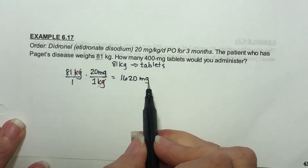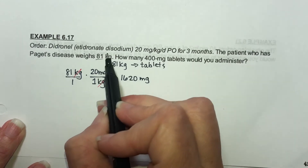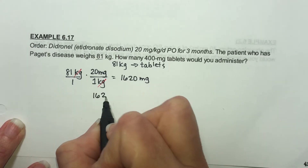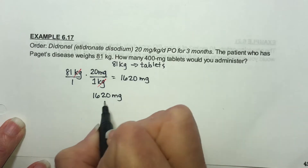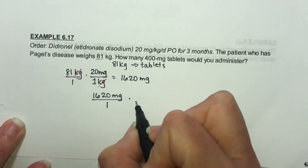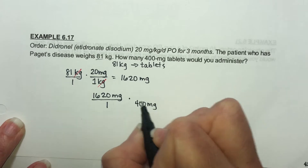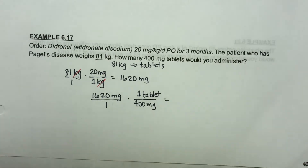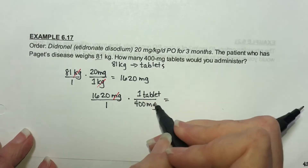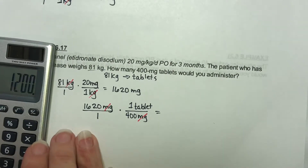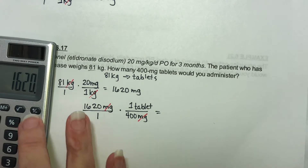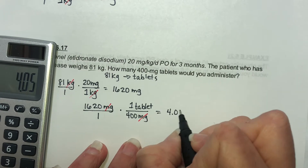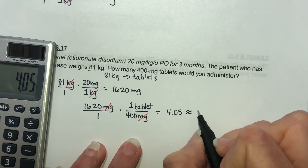I have the amount of milligrams I'm supposed to give, and I've used this information. How many 400-milligram tablets? I'm supposed to give 1,620 milligrams per day, and there are 400 milligrams per tablet. The milligrams cancel out, and if you take 1,620 divided by 400, you get 4.05, which we round to four tablets.